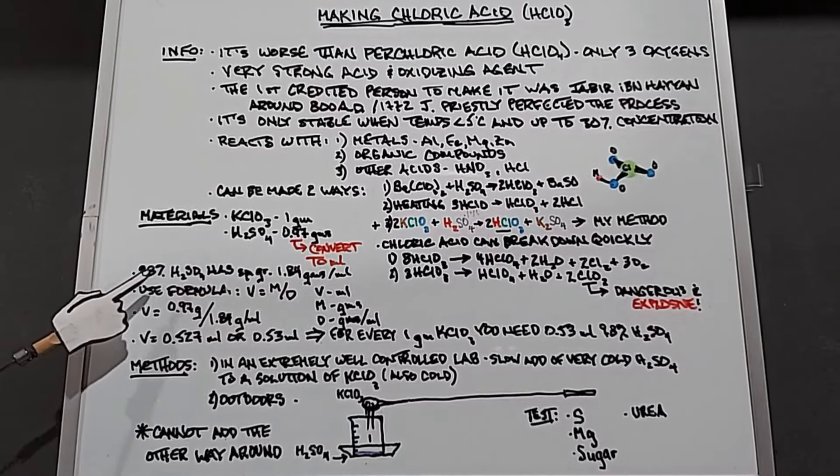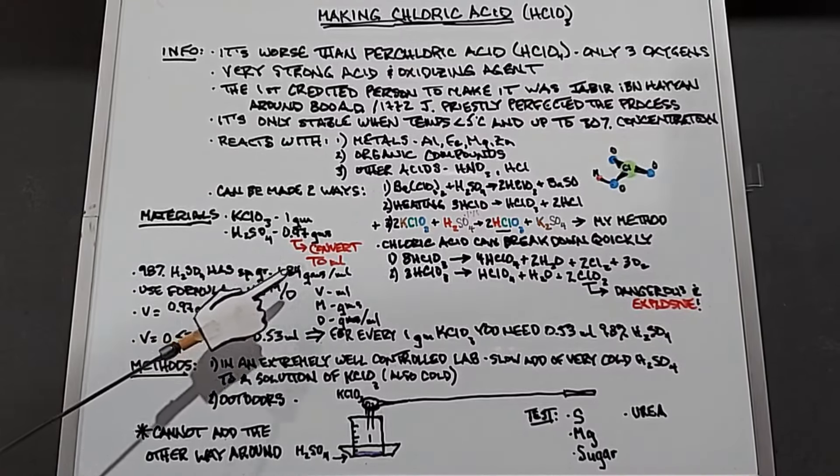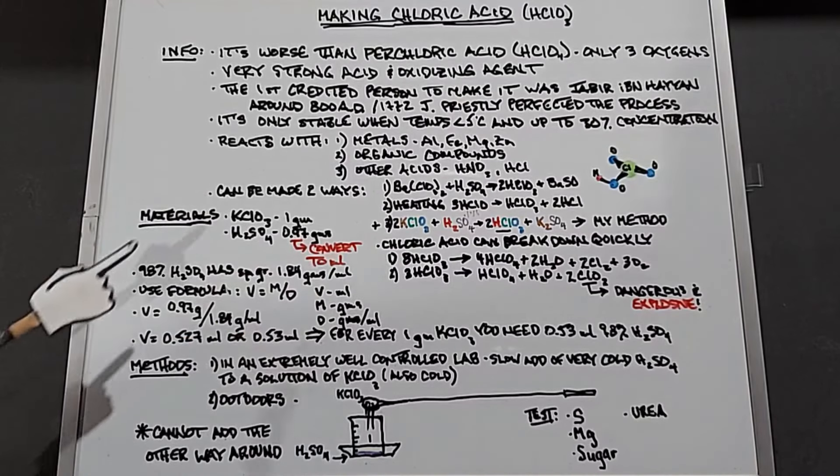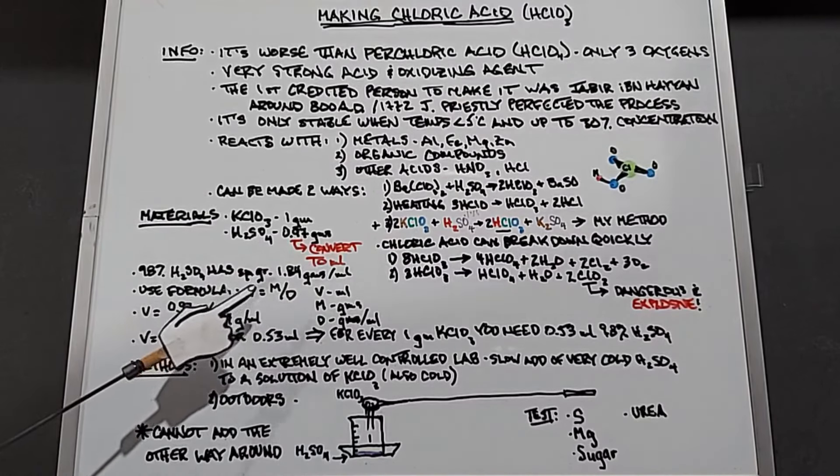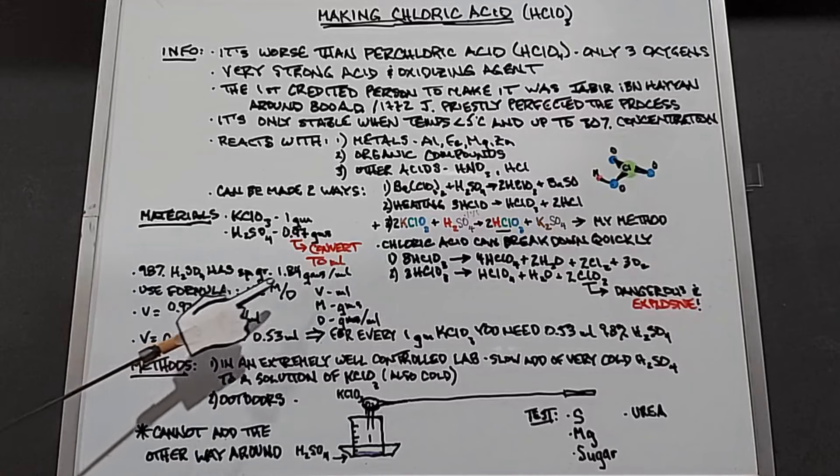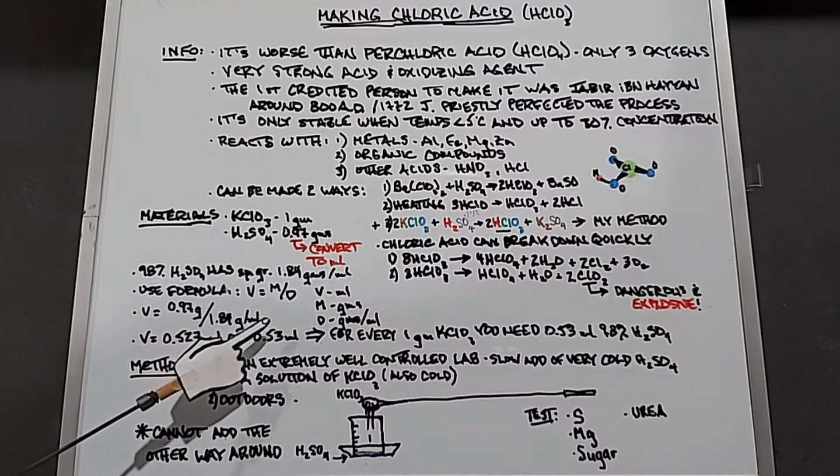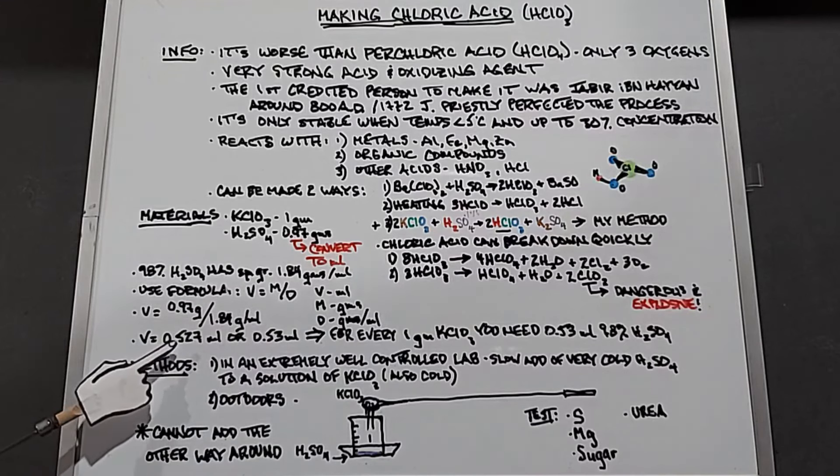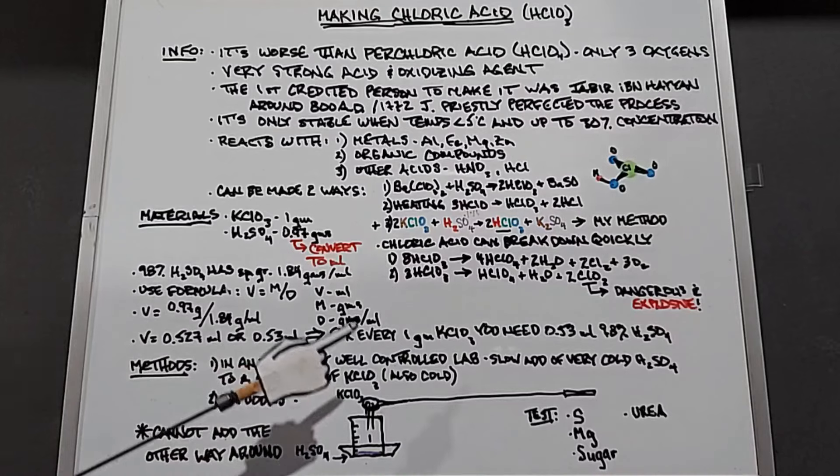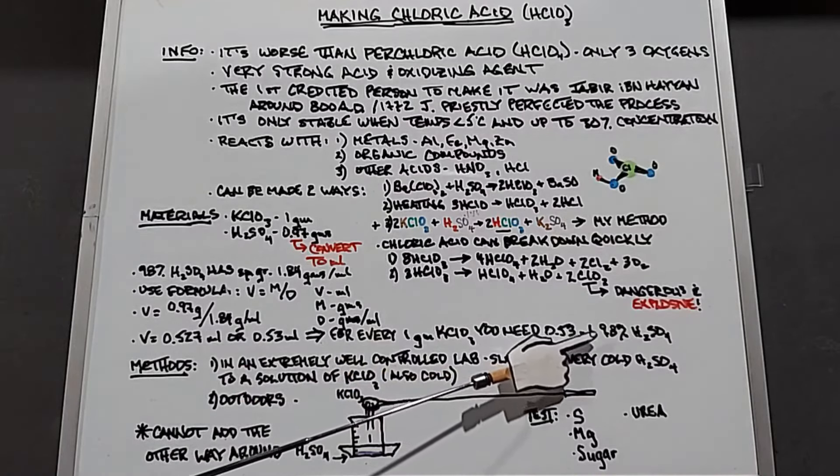We have 98% sulfuric acid with a specific gravity of 1.84 grams per milliliter. Using the formula volume equals mass over density: 0.97 grams divided by 1.84 grams per milliliter gives us 0.527 milliliters, or 0.53 milliliters. So for every gram of potassium chlorate we need 0.53 milliliters of 98% sulfuric acid.